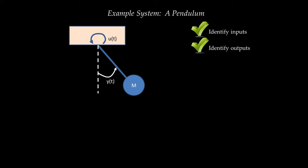The third step is to identify state variables. This is a rotational mechanical system that stores energy due to the rotation of the pendulum, and it stores two distinct kinds of energy. First, as the mass of the pendulum rotates, it rises upwards and therefore stores potential energy. Secondly, as the mass moves, it stores kinetic energy.